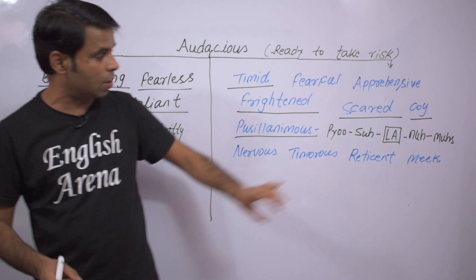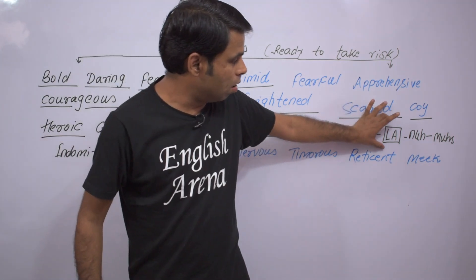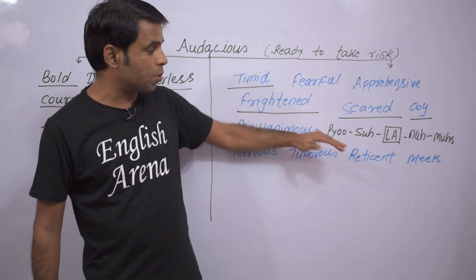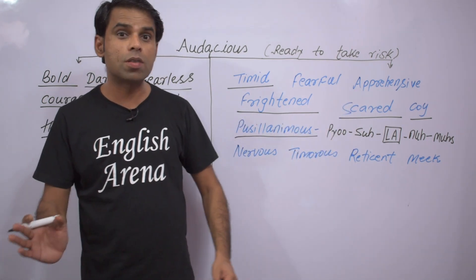P-u-s-i-l-a-n-i-m-o-u-s, and we stress the 'lan' syllable. So the word is pronounced as pusillanimous, pusillanimous.